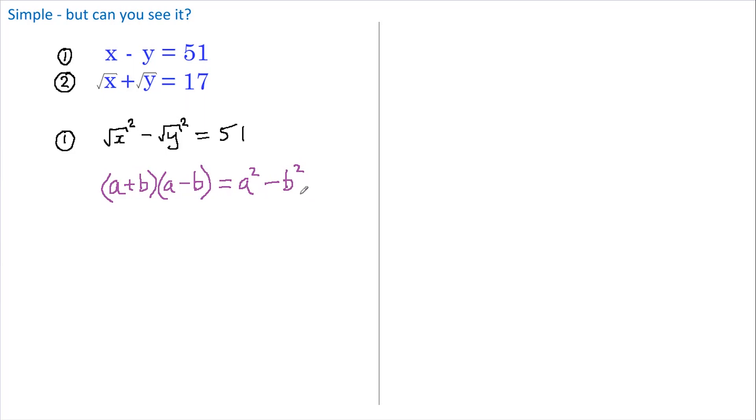So we're left with the difference between two squares. This means that if we wanted to, we could rewrite a difference of two squares like this, and that's exactly what we're going to do. So this becomes root x plus root y in brackets.